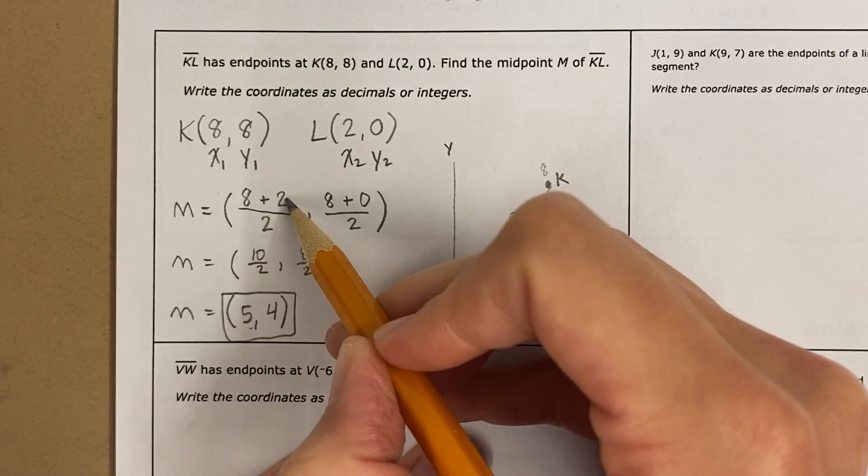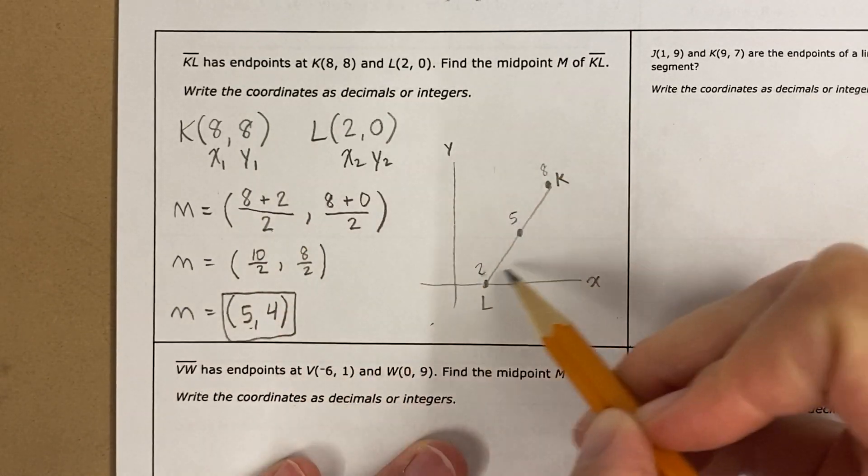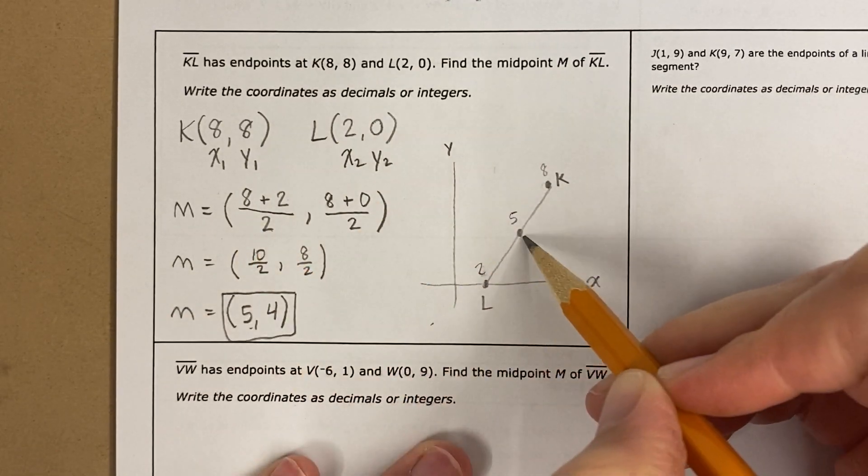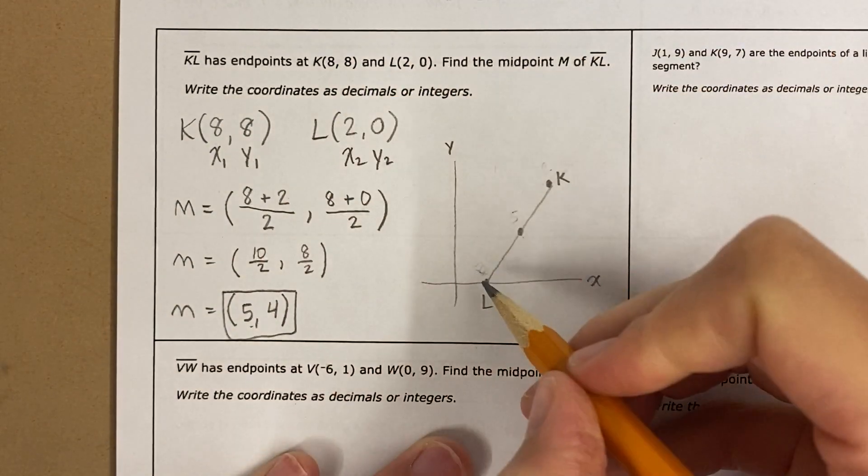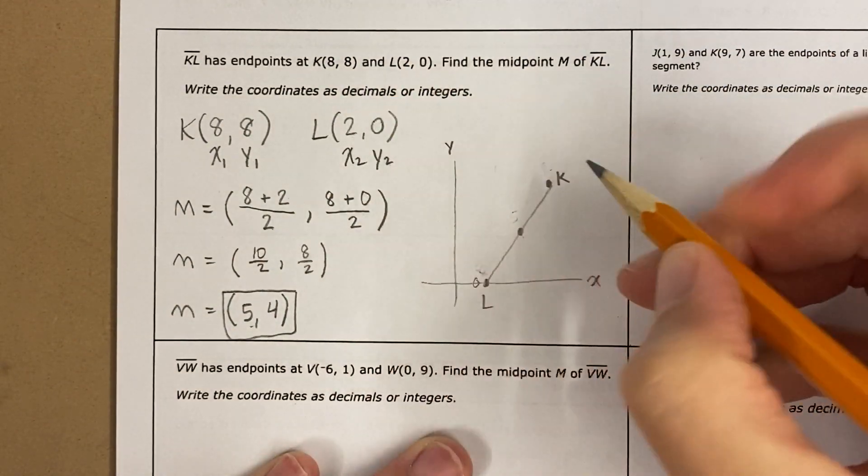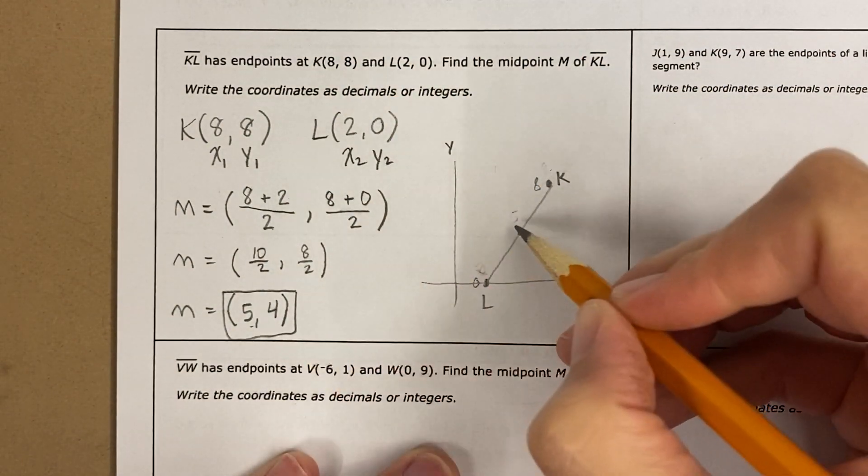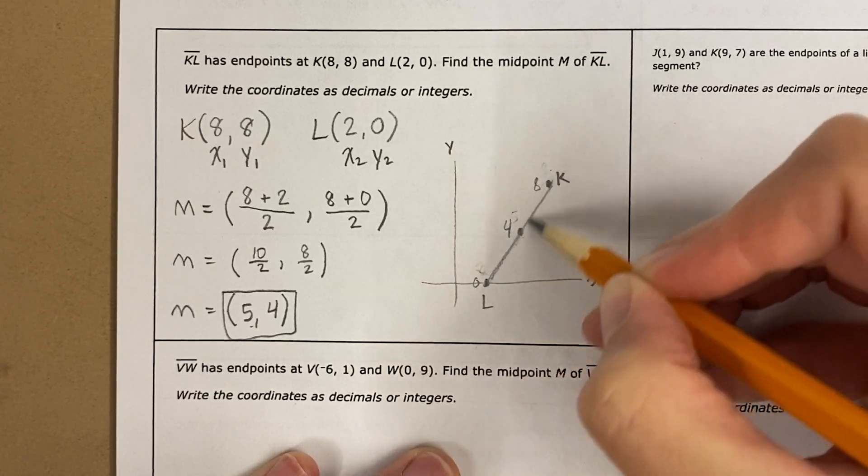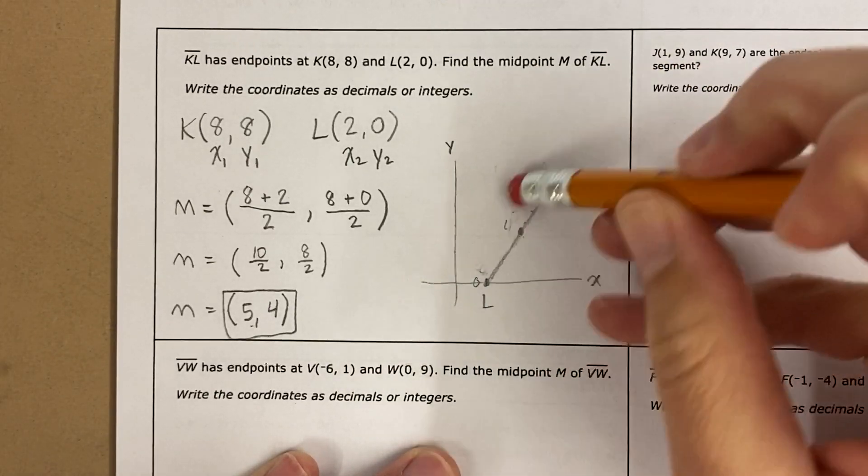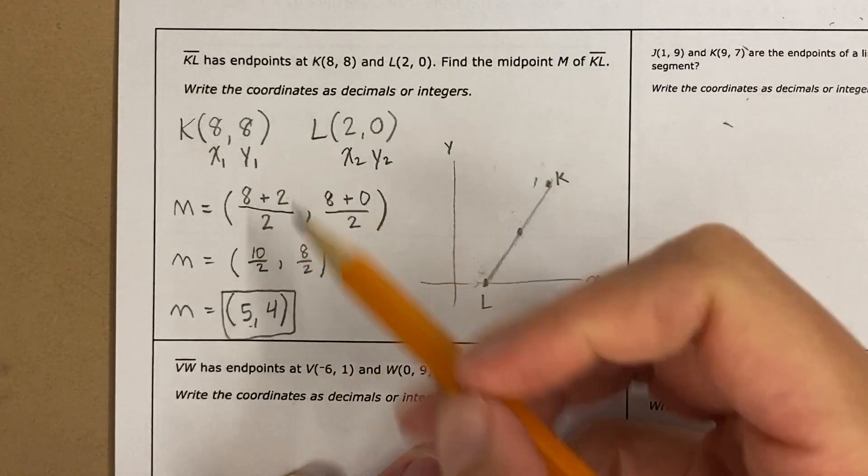How do we find the average of two numbers? We add them and divide them by the number of numbers. So I did 8 plus 2 divided by 2, and I got 5. Now let's talk about the y values. The y value here is 0. The y value here is 8. The midpoint that we found was 4. That's 4 units and 4 units. That is why the midpoint formula works.